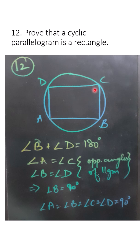Angle A will be equal to angle C. Angle B will be equal to angle D. They are opposite angles of a parallelogram.